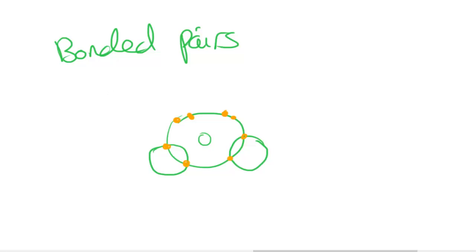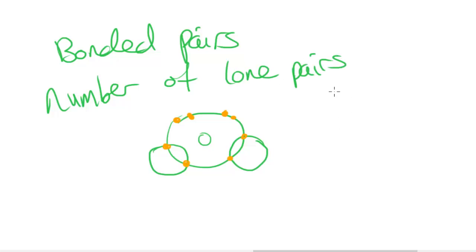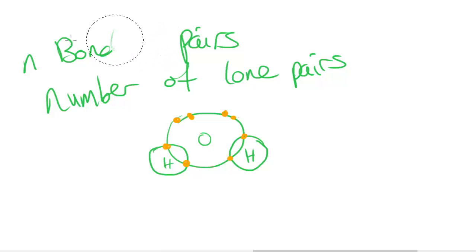Another thing which affects the shape of molecules is the number of lone pairs of electrons. A lone pair is a pair of electrons which is not bonded to anything else. The number of bonding pairs and the number of lone pairs in a molecule will affect the bond angle.